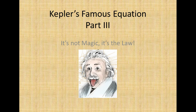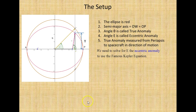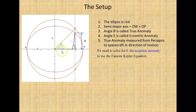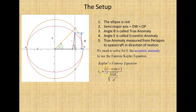Let's start over from determining this small triangle. We have the red ellipse, which is the track of our spacecraft. The semi-major axis is O-W and O-P. Angle theta is called the true anomaly, measured from periapsis P to the spacecraft. Angle E is called the eccentric anomaly, measured from periapsis P to the spacecraft in the direction of motion. We need to solve for E, the eccentric anomaly, to use the famous Kepler equation.